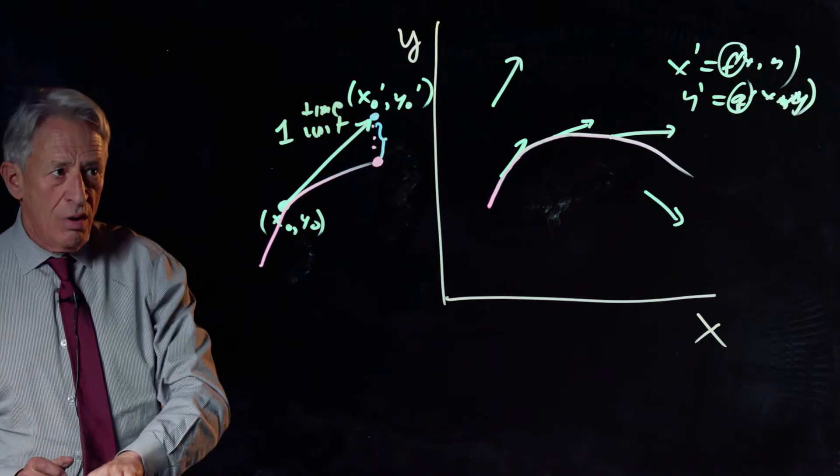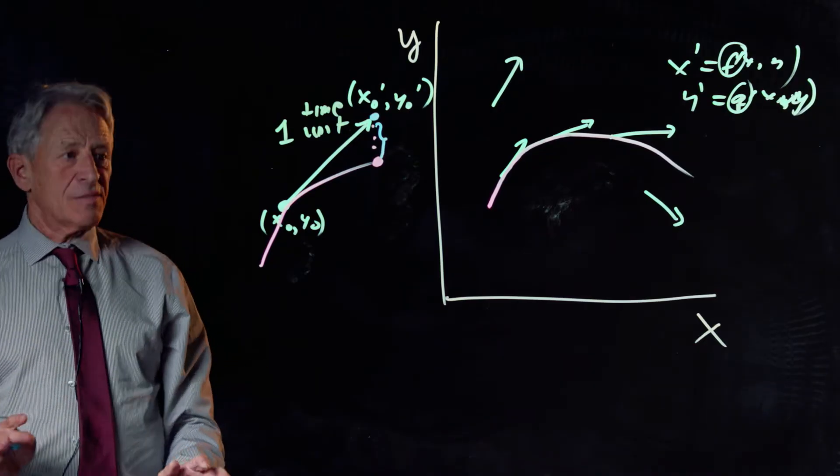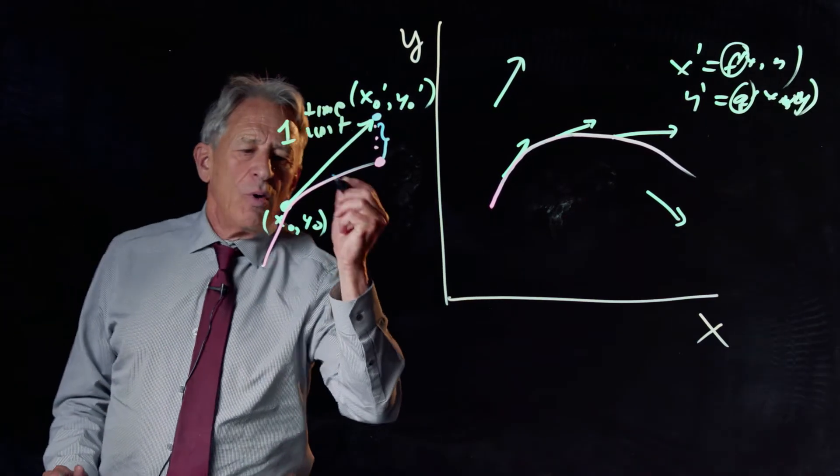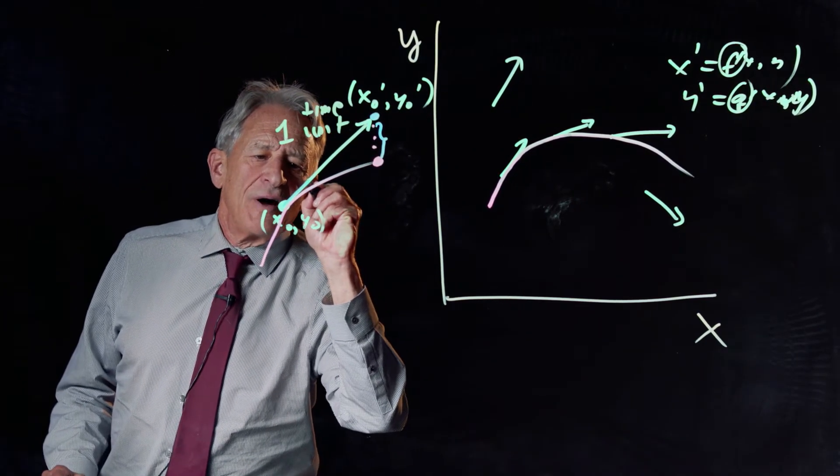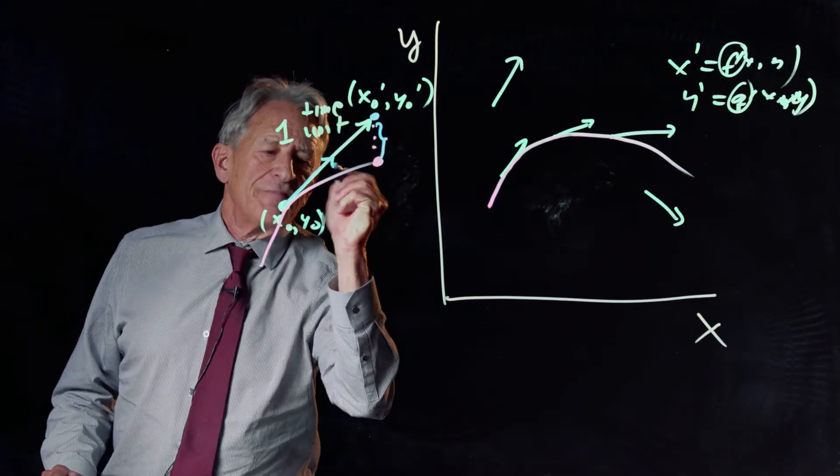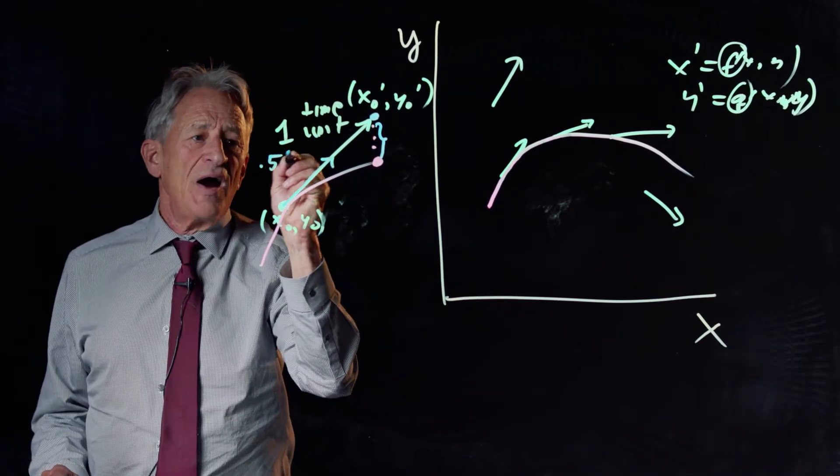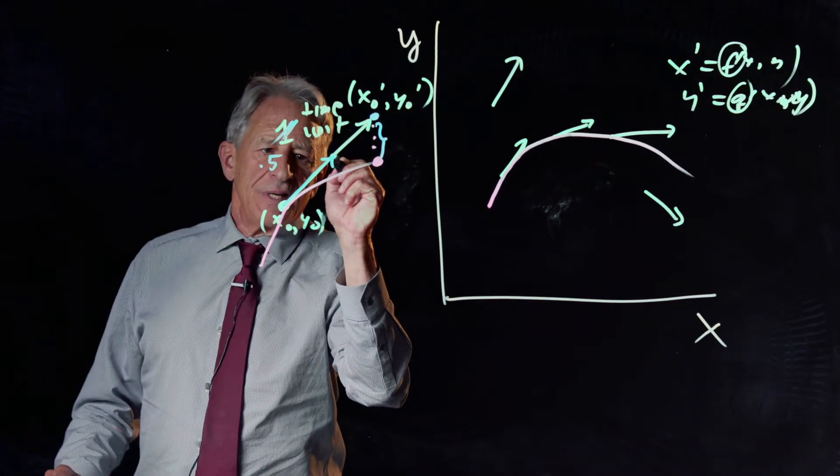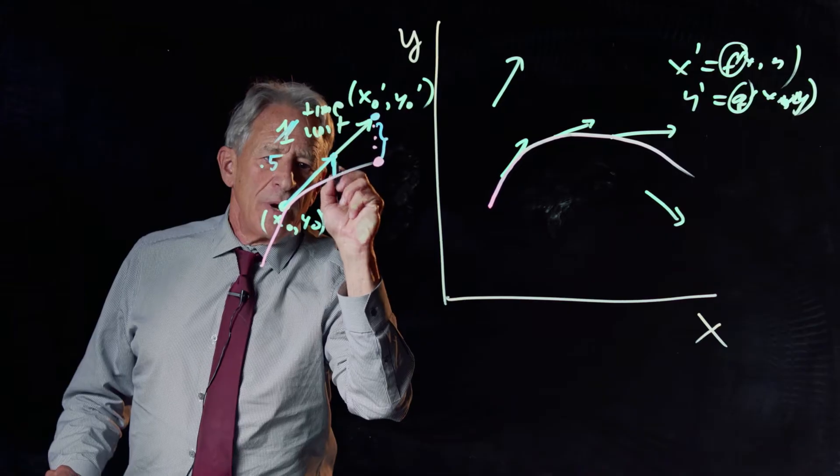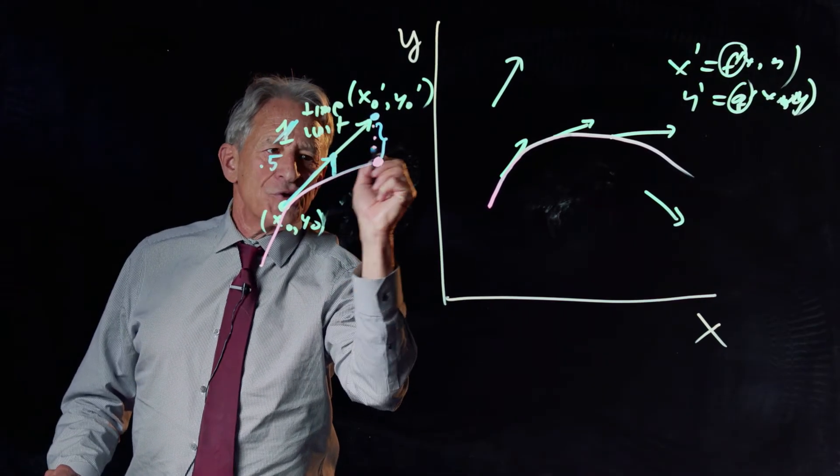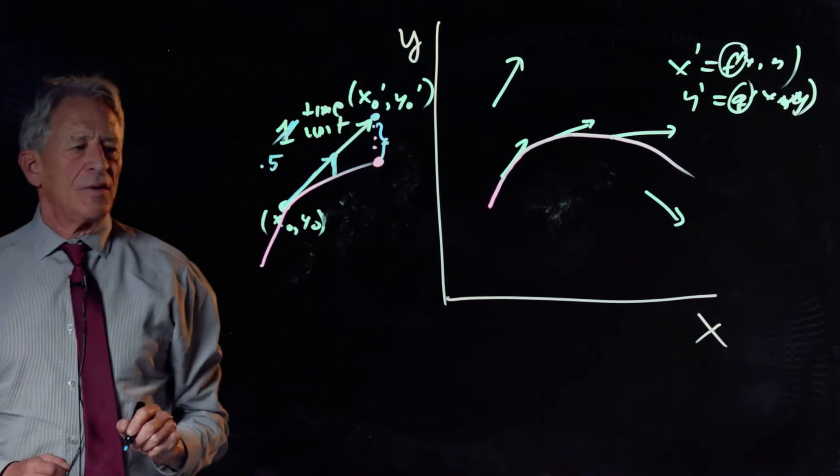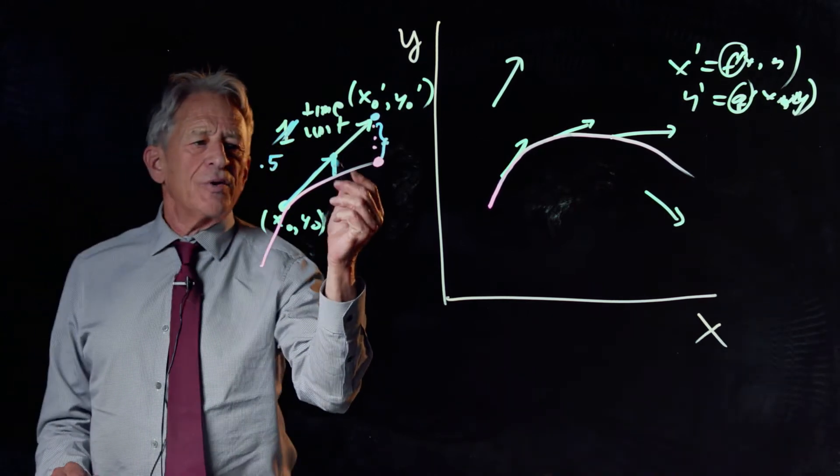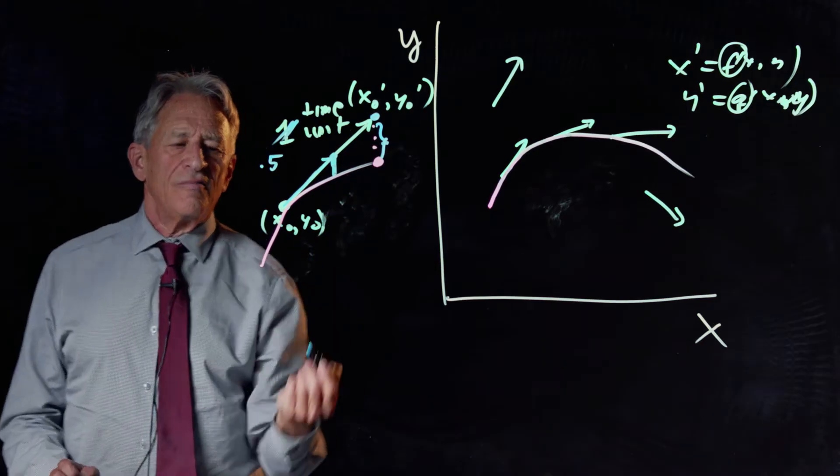So the idea is probably occurring to you, which is, what if I don't follow it so far? What if I follow it for 0.5 time units? So then I've gone to here. And now my error is this. And this is smaller than that. So by taking a shorter lurch, I have increased the accuracy of my approximation.